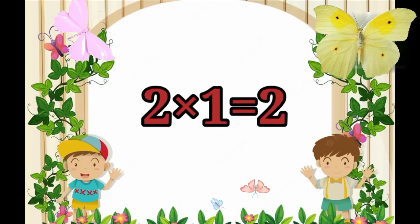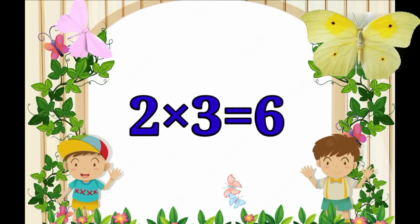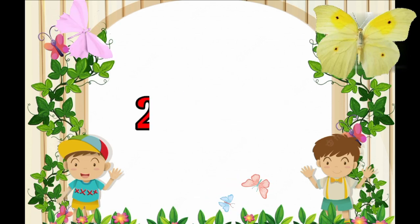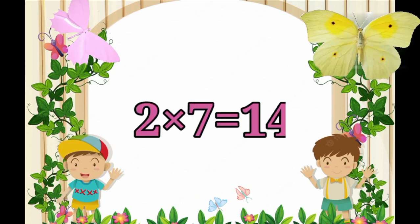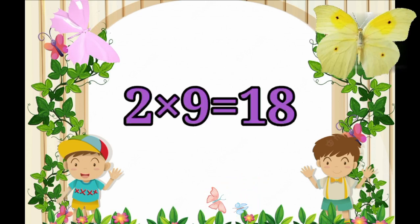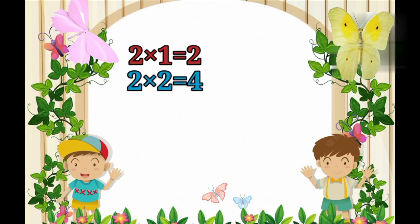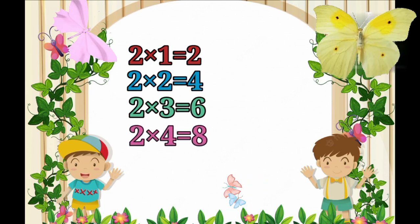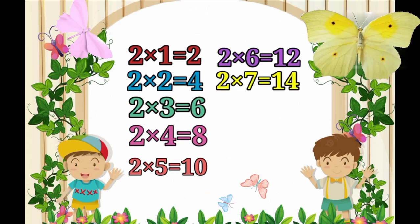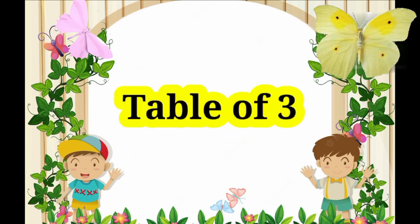Table of 2. 2×1=2, 2×2=4, 2×3=6, 2×4=8, 2×5=10, 2×6=12, 2×7=14, 2×8=16, 2×9=18, 2×10=20.